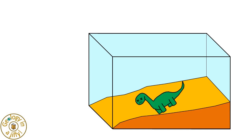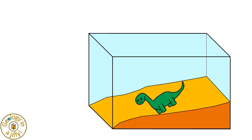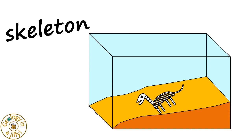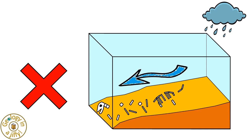Our dead dinosaur will have its soft parts decay or rot away, such as flesh or skin, leaving only its skeleton. But what we do not want to happen is a storm washing away the bones, leaving nothing left to fossilise.